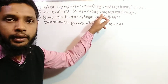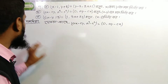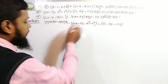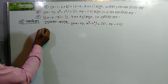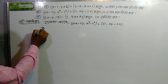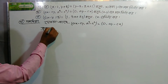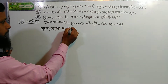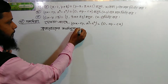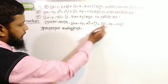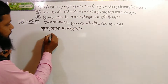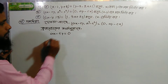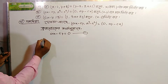We have a number x and y. We have a number of x minus c square from 0. We have a number of x minus c·y equals 0.